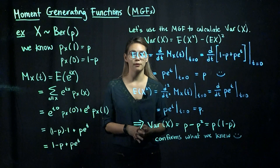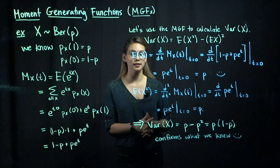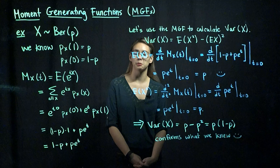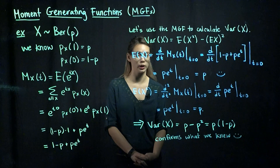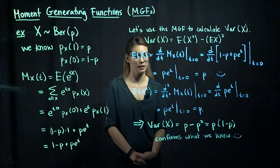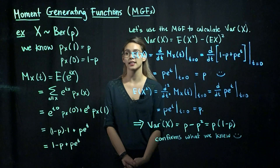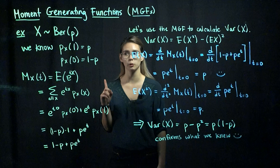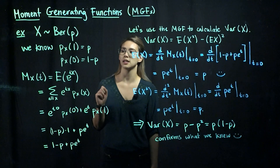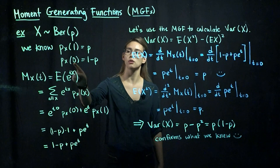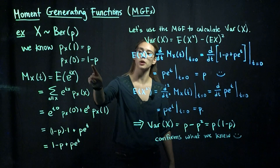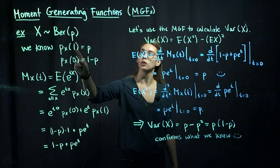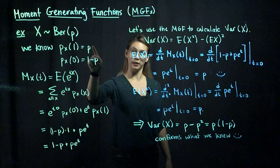Let's have a random variable x have a Bernoulli distribution with probability p. This means x can take on two values: 0 or 1. It takes on the value 0 with probability 1 minus p, and it takes on the value 1 with probability p.